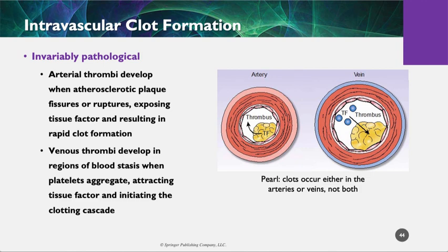Intravascular clot formation can happen — and remember, this is either arterial or venous. It's arterial when an atherosclerotic plaque ruptures and that material from inside the plaque goes into the lumen of the vessel and stimulates blood clot. Venous thrombi develop from stasis — you have too much blood sitting around in the lower extremities, it doesn't get back to the heart, it clots, and then that propagates more clot, it breaks off, goes to the lungs, giving you a pulmonary embolism.